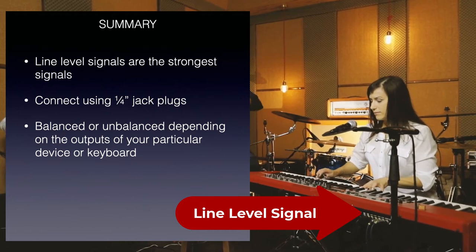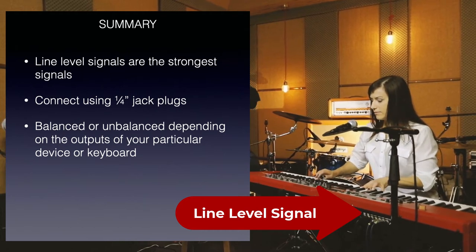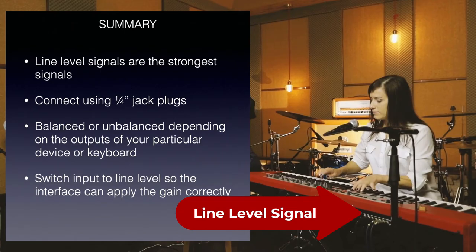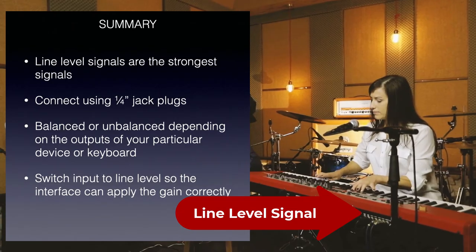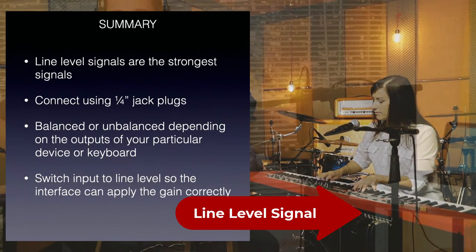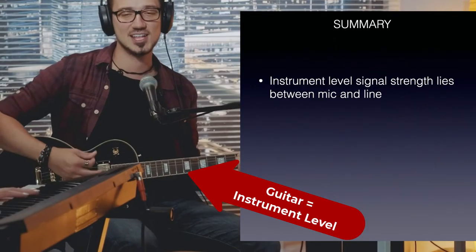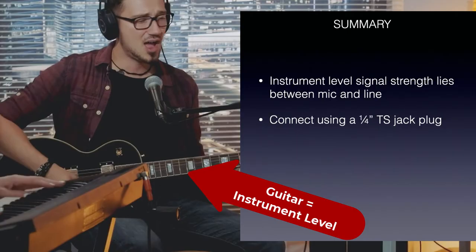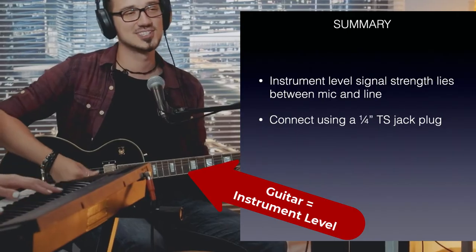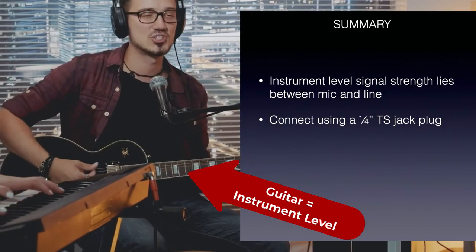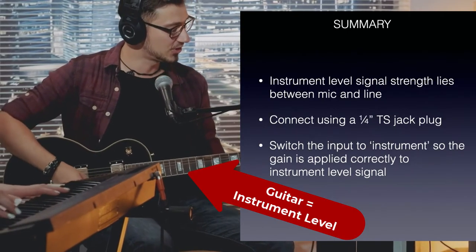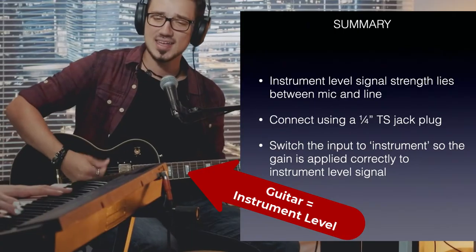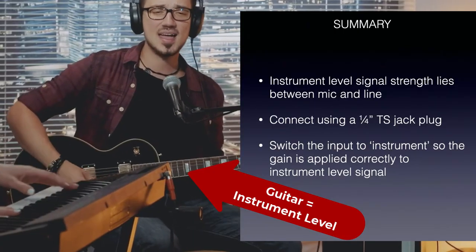Make sure the input is switched to line level so the interface can apply the gain accordingly. Instrument level signals lie between mic and line — connect using a quarter inch TS jack plug and switch the input to instrument so the gain is applied correctly to that level of signal.